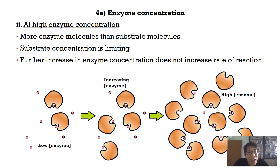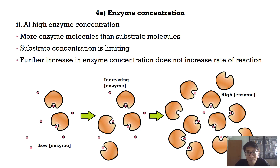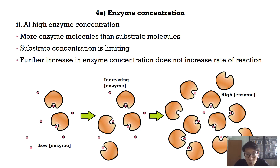But when the enzyme concentration continues to increase until it becomes high, there would be more enzyme molecules than substrate molecules. The substrate concentration then becomes the limiting factor. There are already too many enzymes, so some enzymes do not have substrates to bind to at any one time. Further increase in enzyme concentration would not increase the rate of reaction — it is no longer the limiting factor; the substrate concentration is.